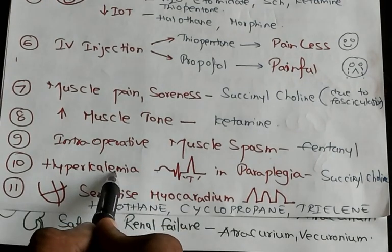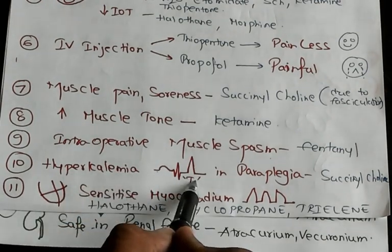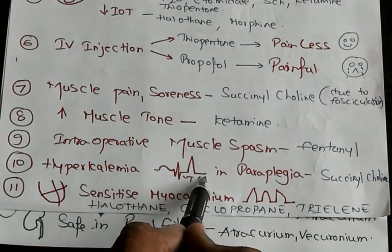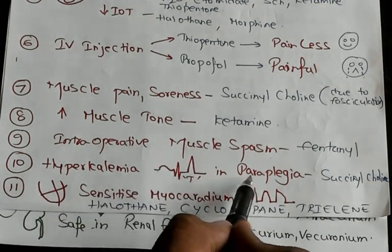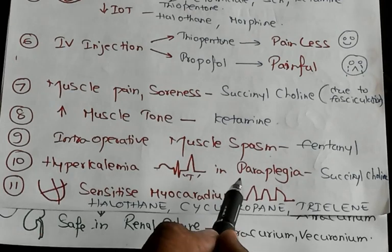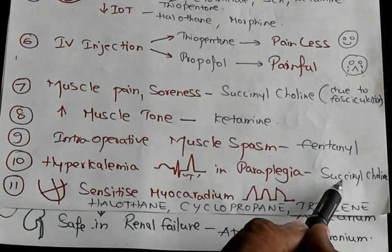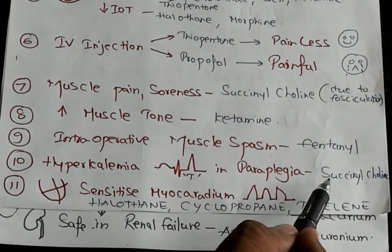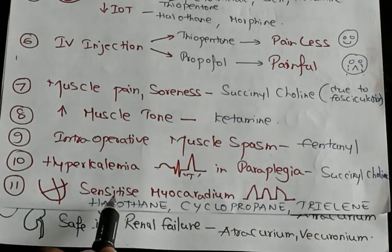Point number ten: hyperkalemia with tall T-waves in a paraplegic individual is typically caused by succinylcholine.